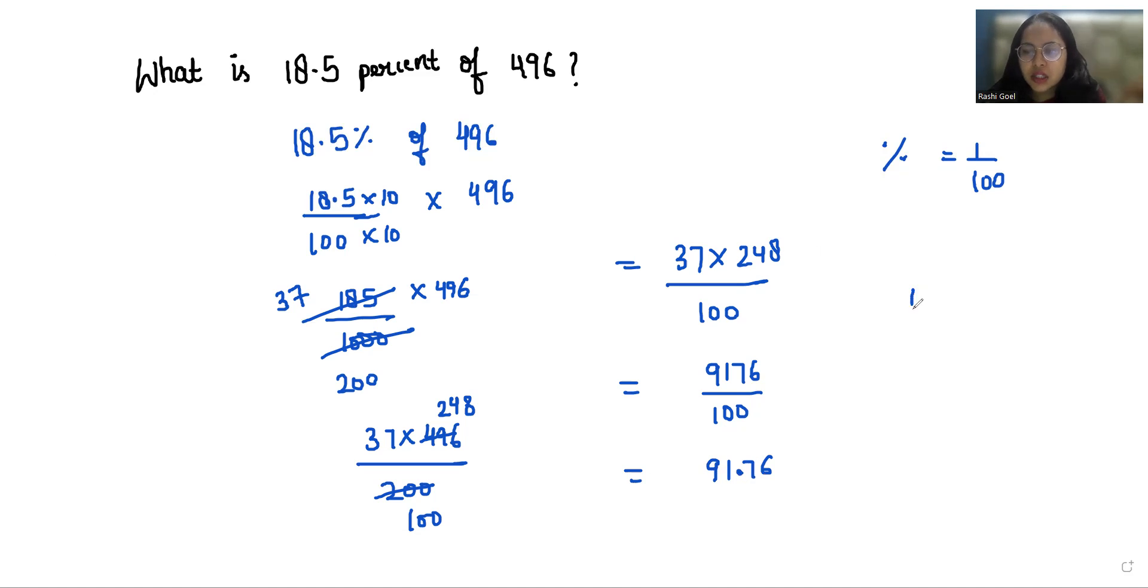So we can say that 18.5 percent of 496 is 91.76. I hope it's clear and you find it useful.